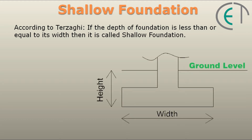Just below the definition you can see the figure of shallow foundation. Here the height or depth of the foundation has been determined from the ground level to the bottom of the foundation, and it is clear that the height of the foundation is less than the width of the foundation. So according to the definition, DF is less than or equal to B, where B is the width of the foundation and DF is the height or depth of the foundation.